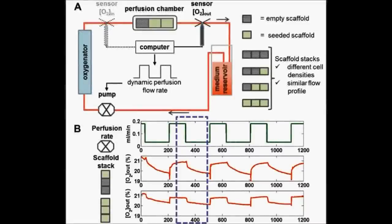By applying step changes in flow rate, the dissolved oxygen concentration per unit volume of medium is altered due to the cellular consumption proportional to the residence time of the medium in the scaffold. The resulting dynamic oxygen response to the perfusion rate can be measured by a single sensor at the perfusion chamber outlet.